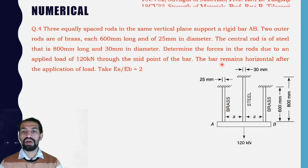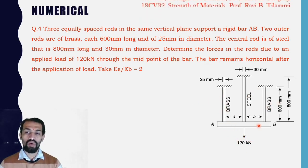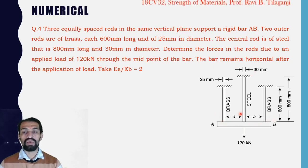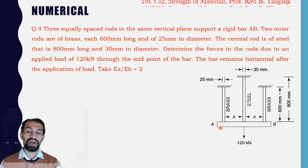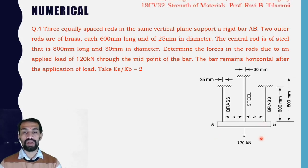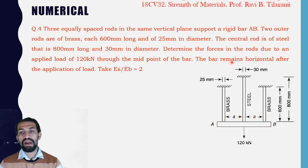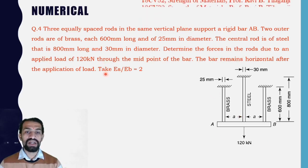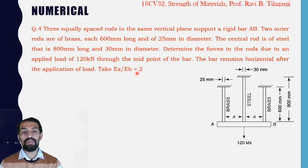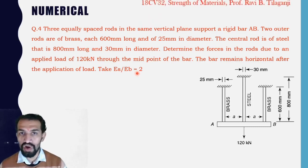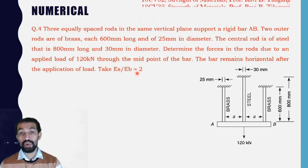The bar remains horizontal after the application of load, meaning equal elongation takes place in both brass rods and in the steel rod. They are also giving us that Es divided by Eb, the Young's modulus of steel divided by Young's modulus of brass, is equal to two.